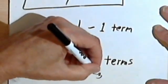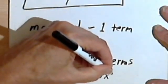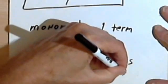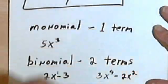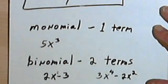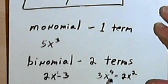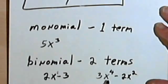If it was 3x to the fourth minus 2x squared, then what we're going to do is use the biggest exponent we have. So the biggest exponent is the 4. So this would be a fourth-degree binomial.